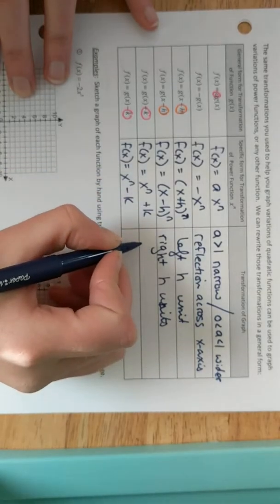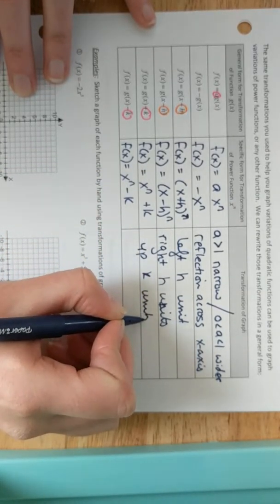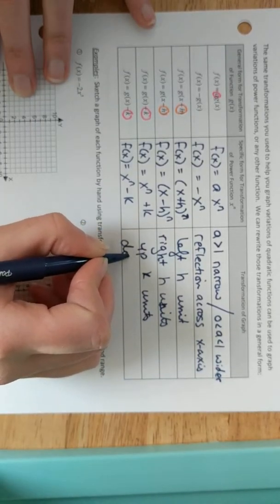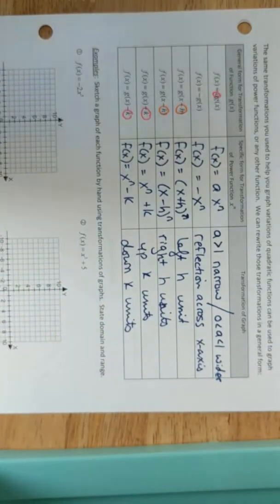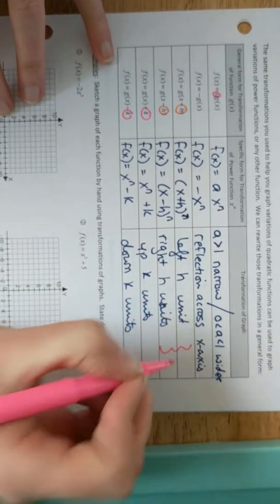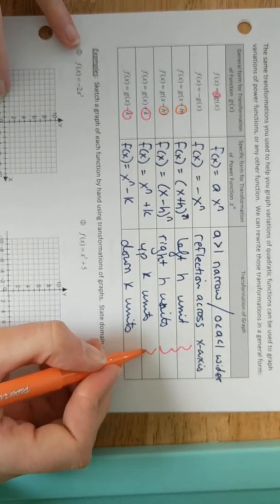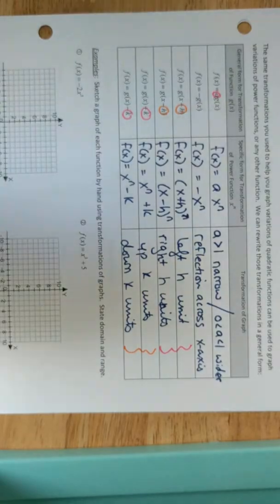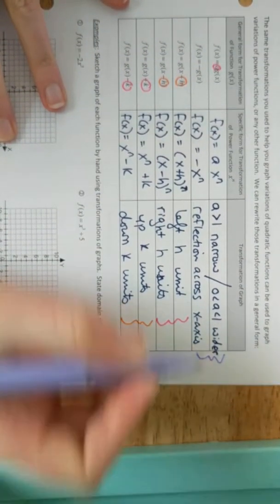Then when we get back to our k's, they are what we would expect for our up-down shifts. Plus k is up, down k is the negative. And so these ones are after the n, so we have our x to the n plus k, and we have our x to the n minus k. Plus k is our up k units, and minus k is our down k units.